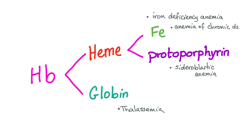Microcytic anemia. To understand thalassemia, we need to understand that hemoglobin consists of heme and globin. Heme consists of iron and protoporphyrin. Both iron deficiency anemia and anemia of chronic disease have the problem in the iron — either deficient in iron or unable to utilize it. Sideroblastic anemia has the problem in the protoporphyrin pathway. Thalassemia — today's topic — the problem is in the globin.